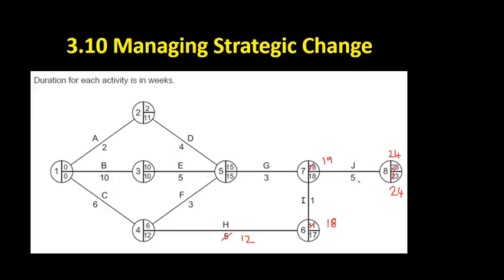And let's work backwards and see what's happened to the critical path. So we start again at 24. The latest finish time for activities G and I. If we're going to finish on 24 weeks, activity J takes five weeks to do. So that's going to be 19.